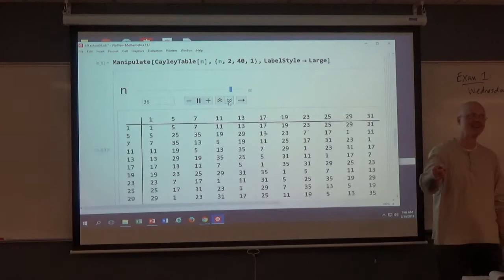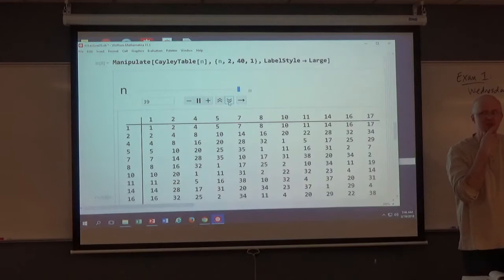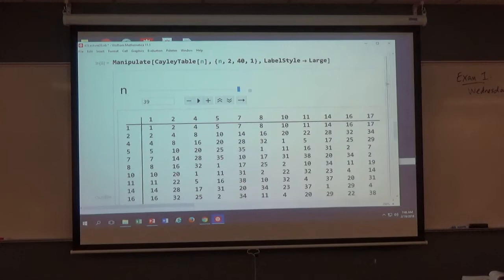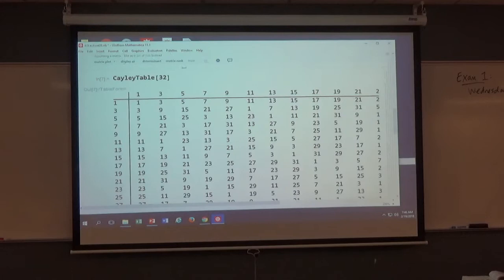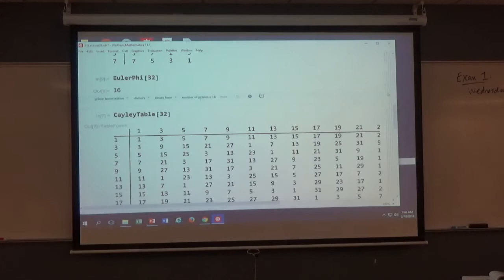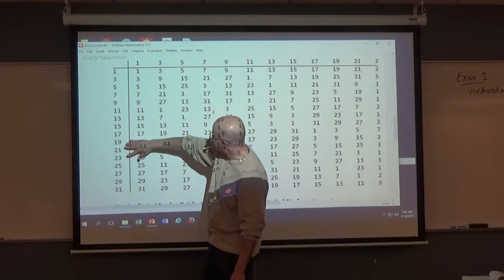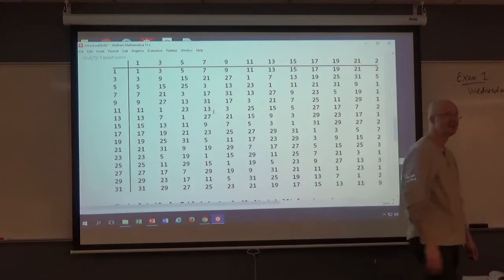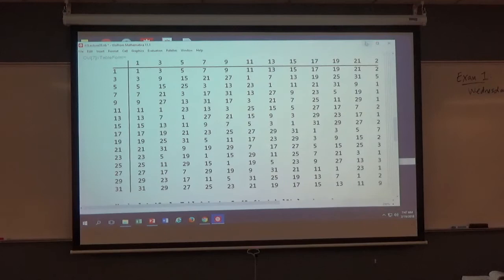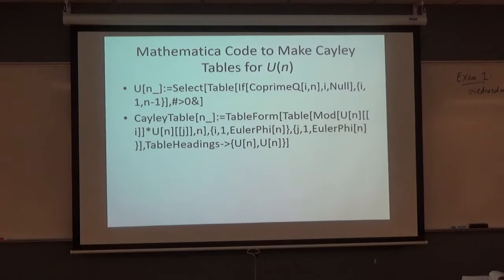Of course, the number of elements in U(n) is what? We talked about this last Friday. What's the number of elements in U(n) in general? It's related to a new function that I talked about last Friday. Euler-Phi function. So, for example, the number of elements in U32 should be Euler-Phi of U32, which is 16. We have 16 elements here. U32 has 16 elements in it. So, I have fun doing that at this point. Alright. On to the main content.